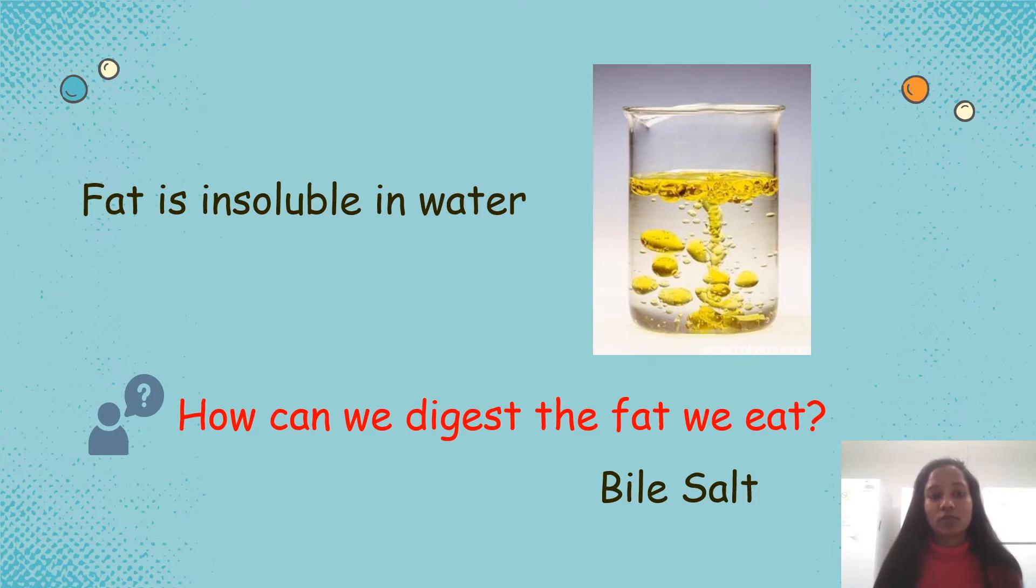Fat is insoluble in water. Then how can we digest the fat we eat? To do that, we have something similar to the structure of soap which is called bile salt. So this bile is secreted from the liver in human body.